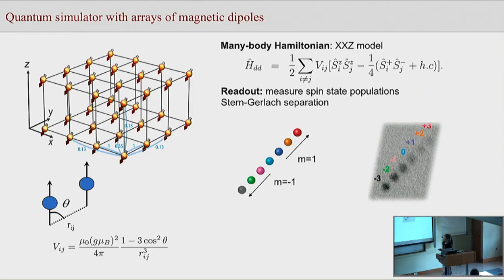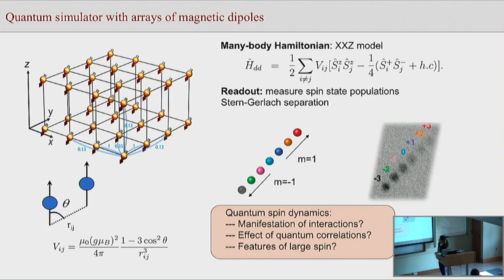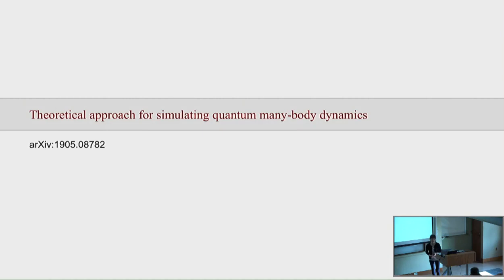With all this experimental capability, the key questions we want to answer are: how does the dipolar interaction manifest in the spin dynamics, how important is the effect of quantum correlations, and do we gain anything now that we have a larger spin?